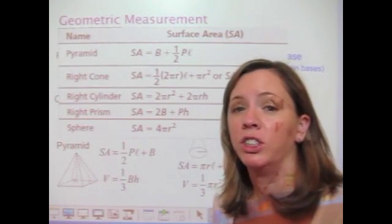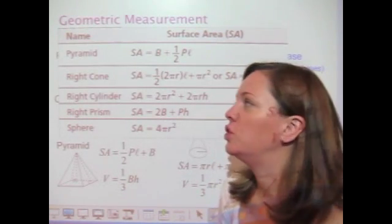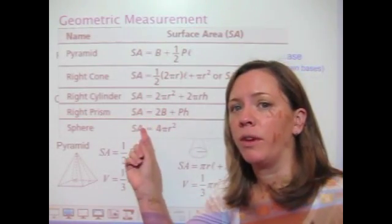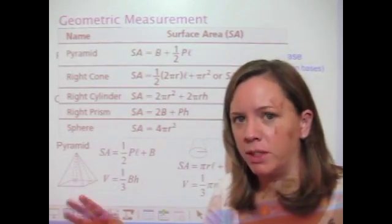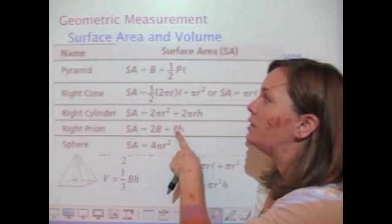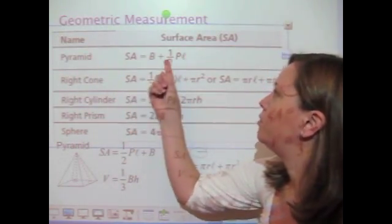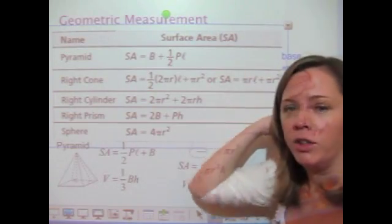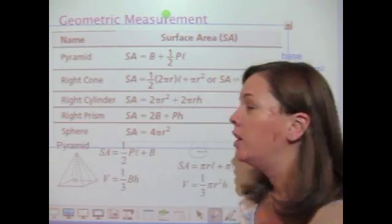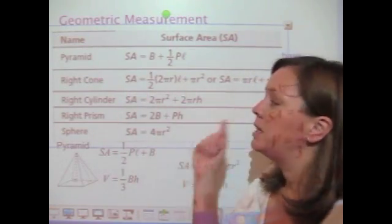In this section, we're going to look at geometric measurement and basically everything that has to do with three-dimensional figures and solids. I wanted to show you how you're going to see these formulas on the reference sheet because, again, don't memorize any of this stuff. The one downside to these formulas is there's no diagrams that go with any of the formulas. You can see it gives pyramid, then the surface area formula, the volume formula after that, right cone, right cylinder, right prism, and a sphere. It's really helpful to look at the diagrams and know what all of these pieces mean.